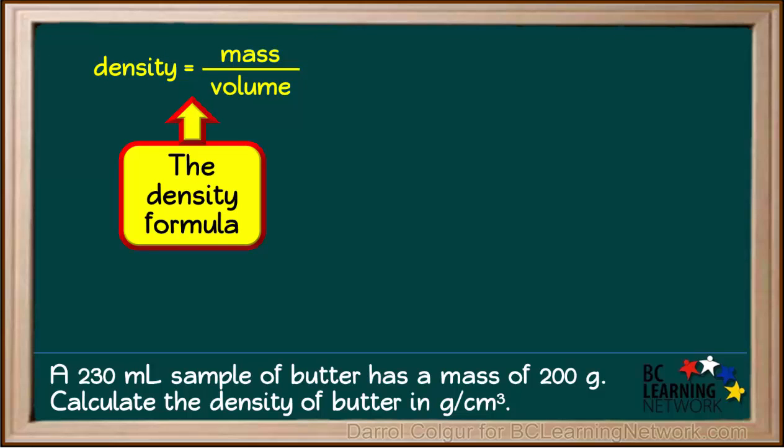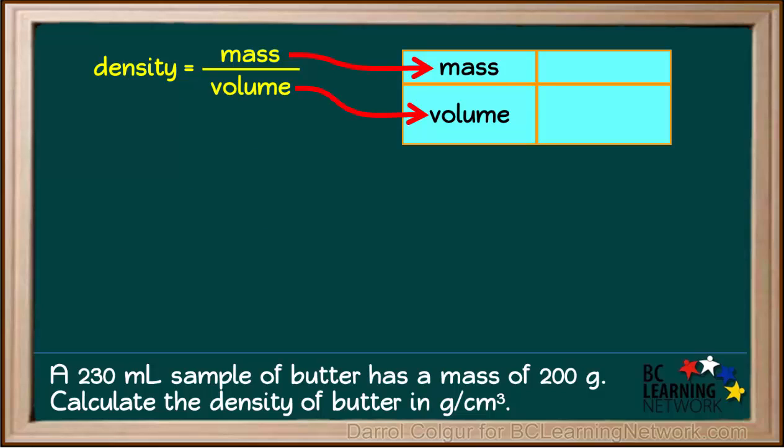We know that the formula for density is density equals mass divided by volume. We'll make a note of the mass and volume in a table here. The mass of the sample is 200 grams.